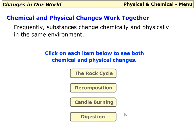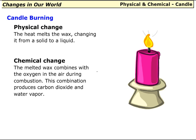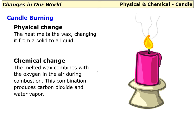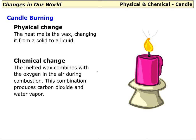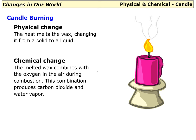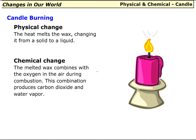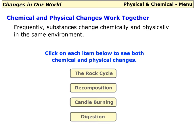Candle burning — physical change: the heat melts the wax, changing it from a solid to a liquid. Chemical change: the melted wax combines with the oxygen in the air during combustion. This combination produces carbon dioxide and water vapor.